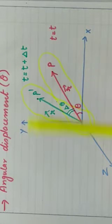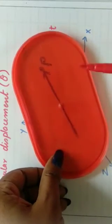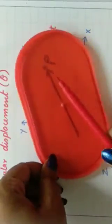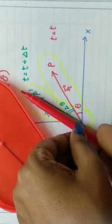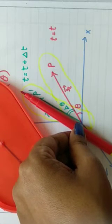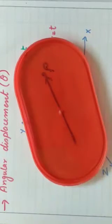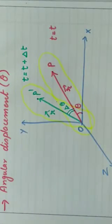So this is a rigid body. Now I'm studying this one particle's angular displacement — that in time interval delta T, this particle's position with respect to x-axis changes by delta theta. The important thing to understand is that since this is a rigid body, the distance between any two particles of the rigid body remains constant.